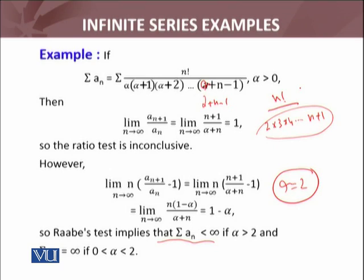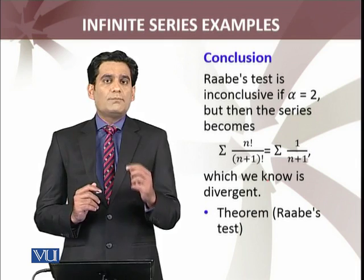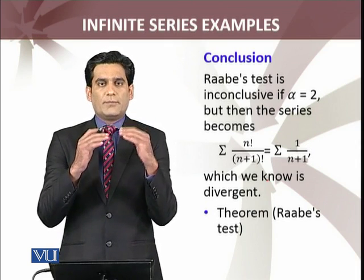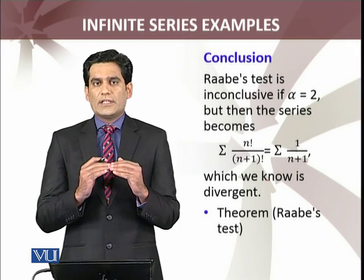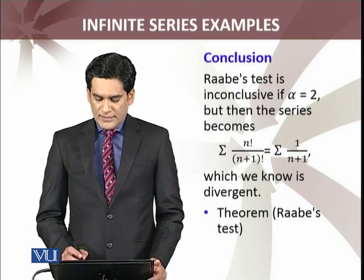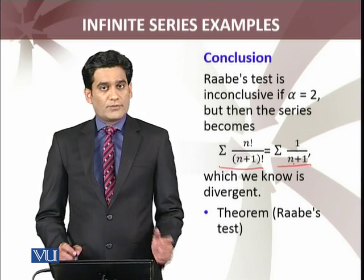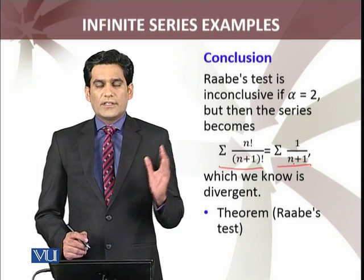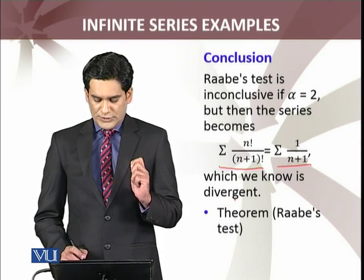Now use the property of factorials. That summation equals 1/(n+1), which equals summation 1/n. Now, this series, which we know is divergent.